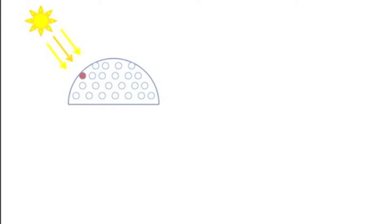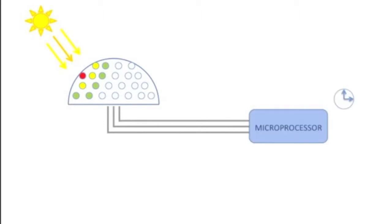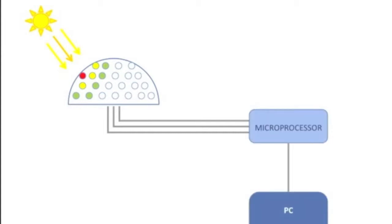A hemisphere of photoresistors will collect data about incident light. Each photoresistor will be sampled using multiplexers controlled by a microprocessor. The microprocessor, which also acts as a timer, relays the measured data to a PC running LabVIEW, where it will be interpreted.